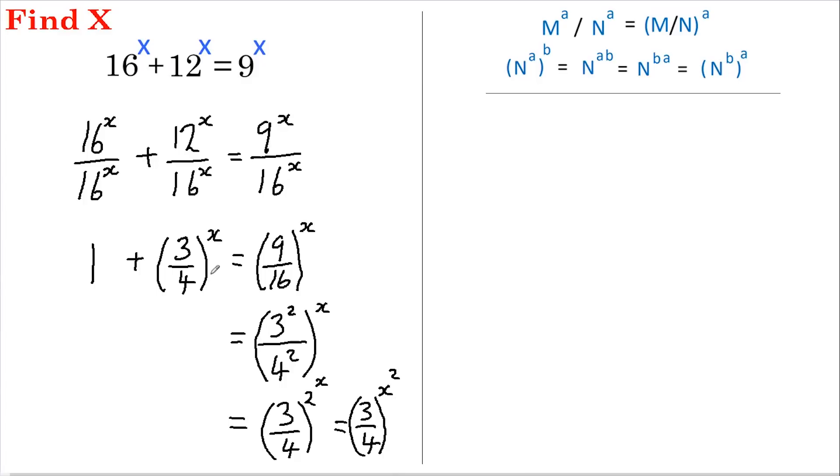So you can see that we now have 3 quarters to the power of x all squared, and on the other side we have 3 quarters to the power of x. Therefore if we let u equal (3/4)^x, then we can rewrite this as 1 plus u equals u squared, or rearranging, u squared minus u equals 1.